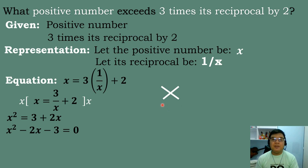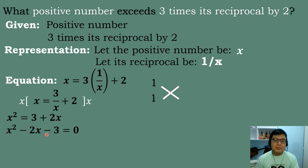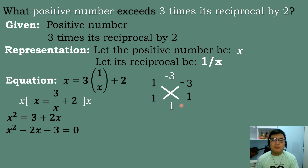Solving using the factoring crisscross method: the numerical coefficient of x squared is 1, so factors are 1 times 1. The factors of negative 3 are 1 times negative 3. Performing crisscross: 1 times 1 equals 1, and 1 times negative 3 equals negative 3. Adding: negative 3 plus 1 equals negative 2, which matches the coefficient of the linear term.